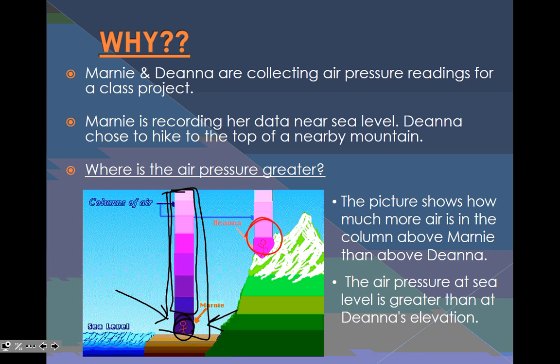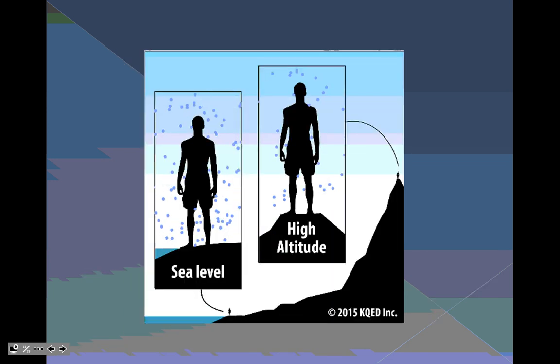So the picture shows how much air is in the column above Marnie, then Deanna, the air pressure at sea level is greater than at Deanna's elevation. That makes sense. And I found also a GIF just to show you at high altitudes compared to at sea level, the difference in air pressure.